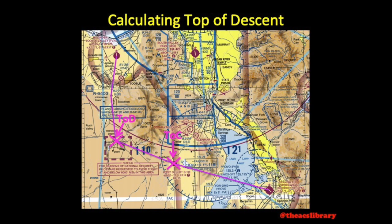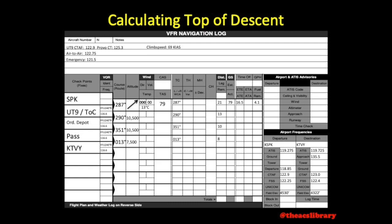Once all top of descent calculations are complete, we head back to our sectional and mark our distance of 18 nautical miles from Tuella. We note that this point falls directly on top of another waypoint. Our top of descent information can be transferred over to our nav log now, including some descent info in the notes. We'll also make note of Tuella's traffic pattern altitude. To find these times, we simply find the time it takes to travel 10 and 8 miles instead of just 18. Fuel burn will be discussed in detail in a later video; for descent, I typically use cruise fuel burn unless the POH has descent fuel burn listed.